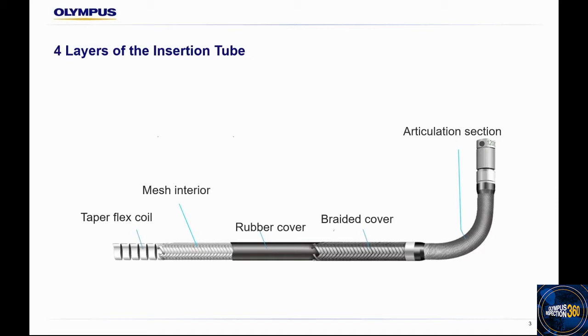One thing I want to mention is the articulation section—that's the section where the insertion tube articulates—has a slightly different design where the braided cover and rubber cover are not glued together. This maintains the articulation capability of the insertion tube. However, this makes this section slightly more susceptible to damage, which I'll discuss more when talking about common practices.